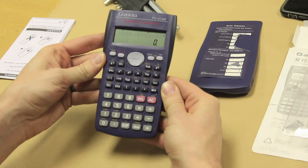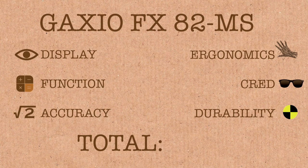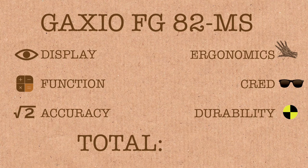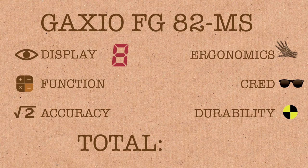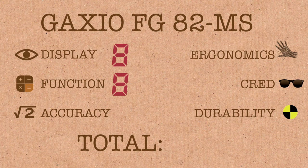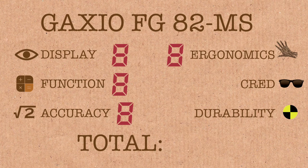Final scores for the imported Gaxio FG 82MS, none of that knock-off Casio rubbish. For display, it's got a good display, bits of it seem to come and go all the time though, so I'm going to give it an eight, or rather most of an eight. For functionality, it's got everything I need, that'll be an eight. For accuracy, I wanted to give it a higher score but it's not quite there every now and then, so I'll drop the 10 down to an eight. Ergonomics, works well in both hands, I reckon it's around an eight. For cred, I mean it's got the Gaxio name, what more do you need, that's an eight. And for durability, obviously an eight. That gives us a total score of 888.